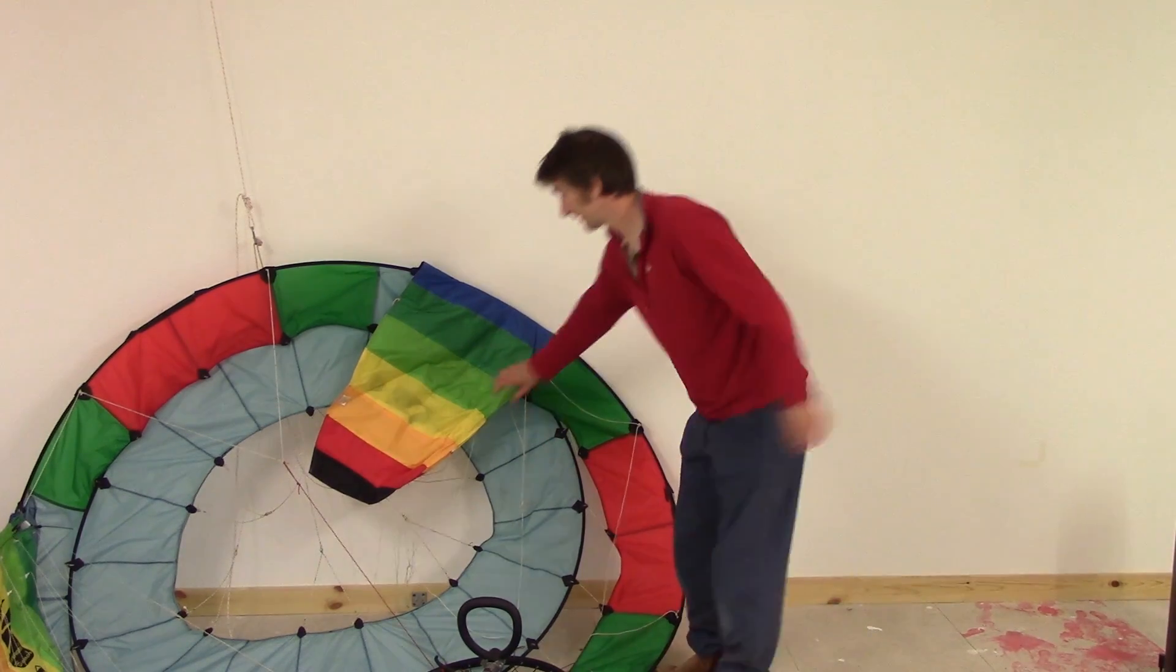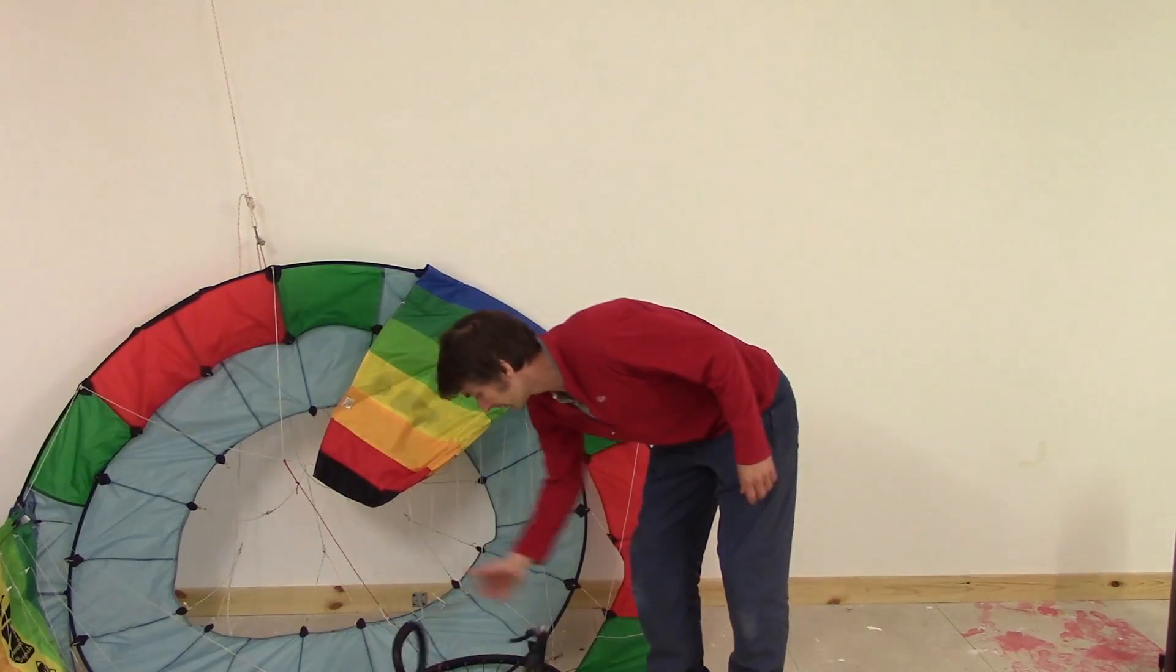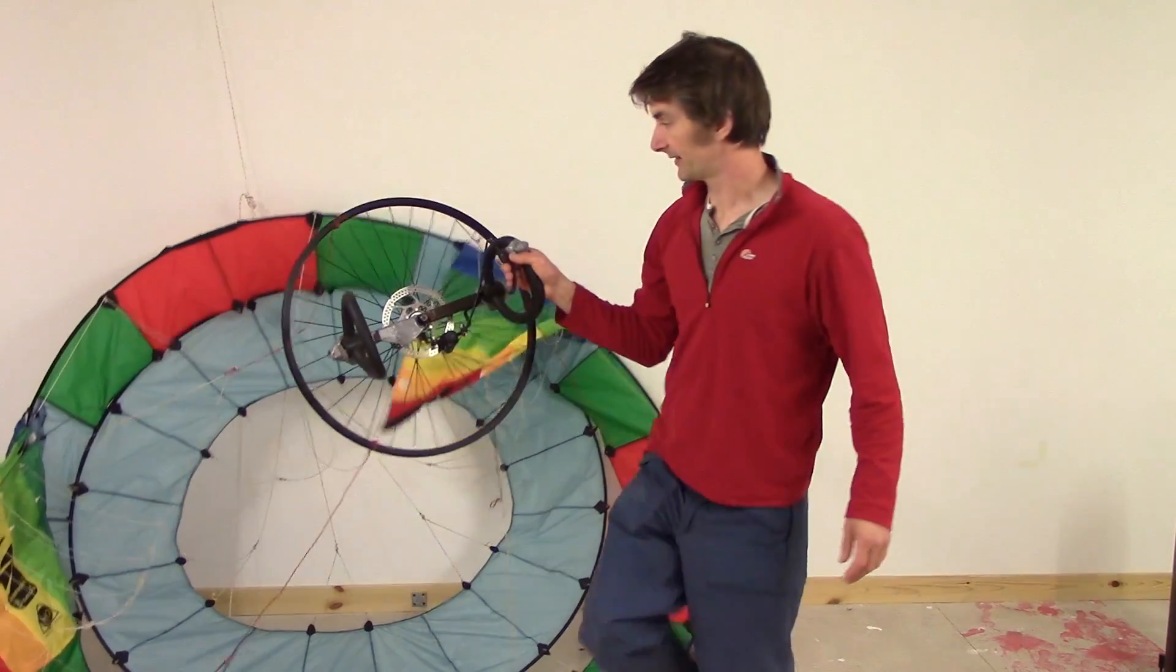You have these driving kite rings which spin the device around. On the ground, that attaches to a wheel.